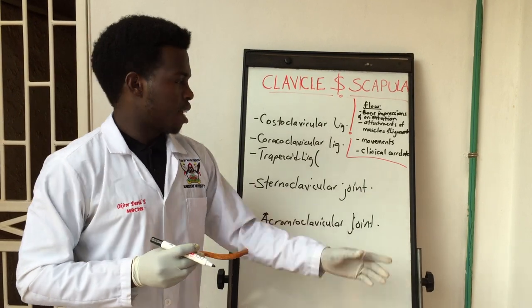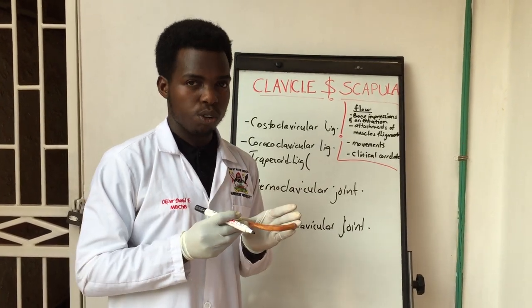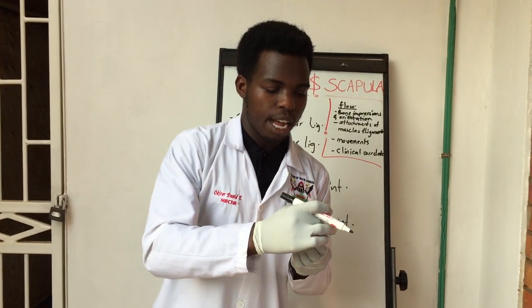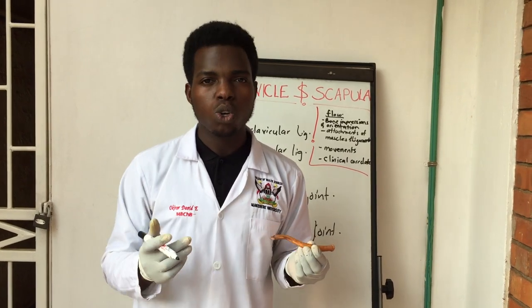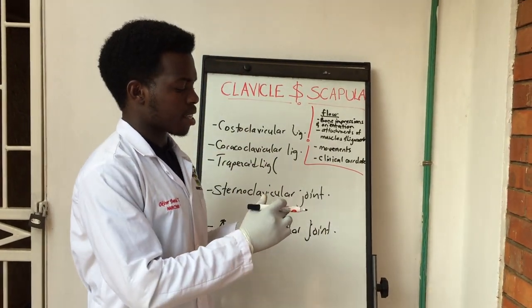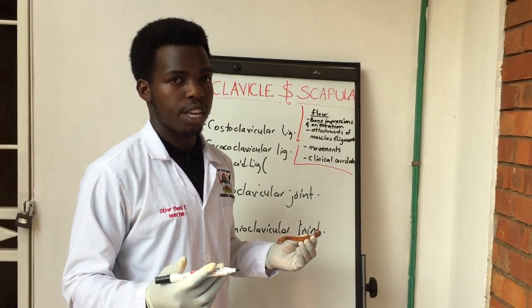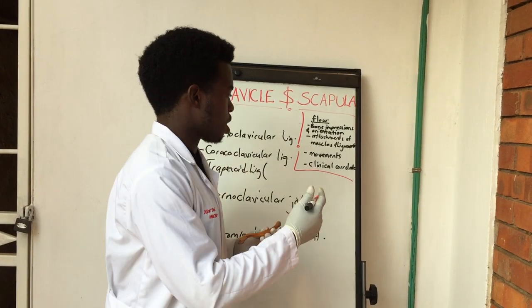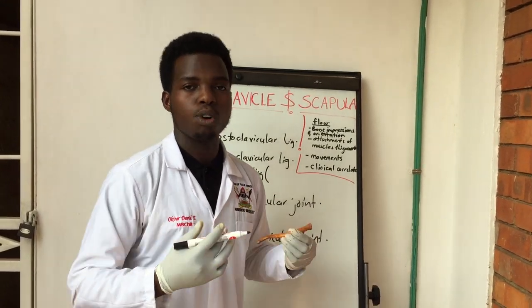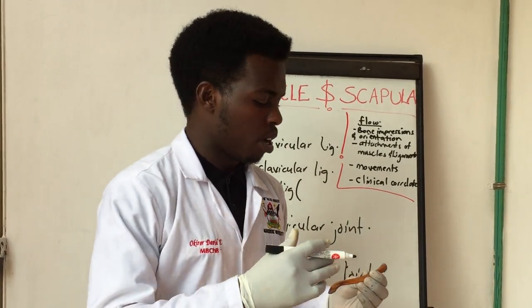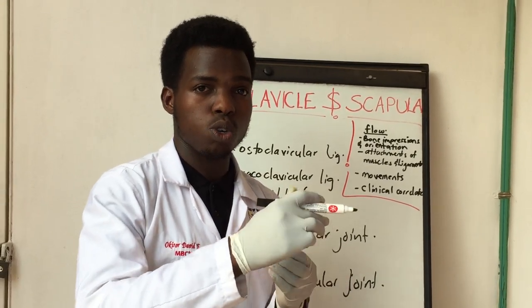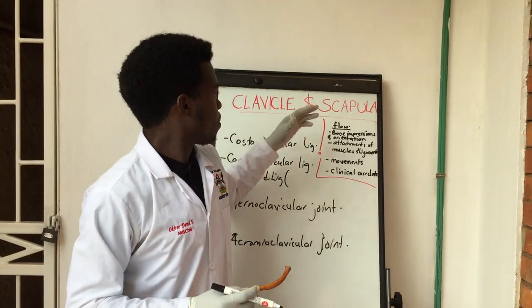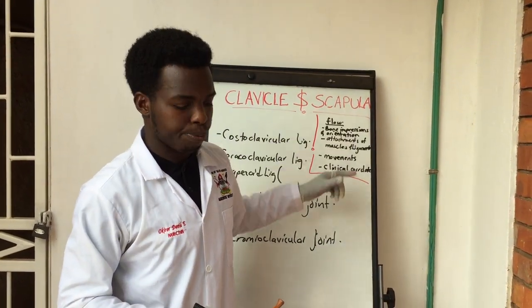Now for the clinical correlates of the clavicle — we have seen that the medial two-thirds and lateral one-third meet at a junction that is susceptible to fracture. Fractures may result from a direct force on the clavicle or from falling on a straight arm, making this part susceptible to fracturing. The result of such a fracture is that the supraclavicular nerve, which is related to the clavicle, could be ruptured.